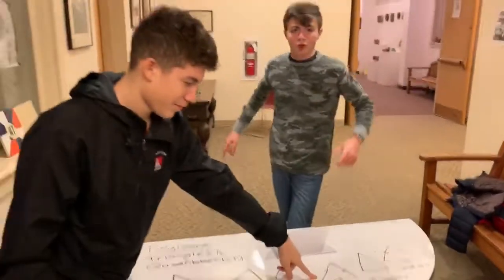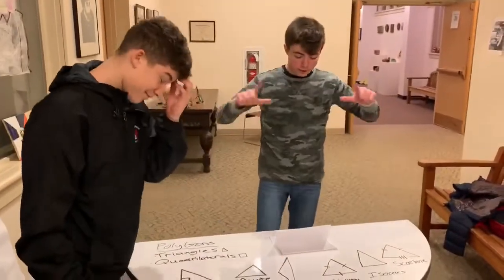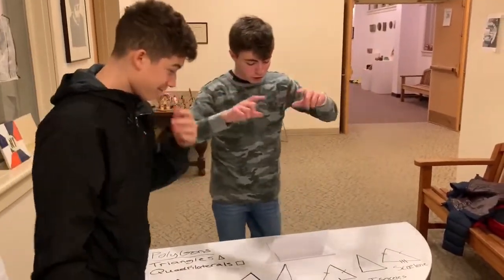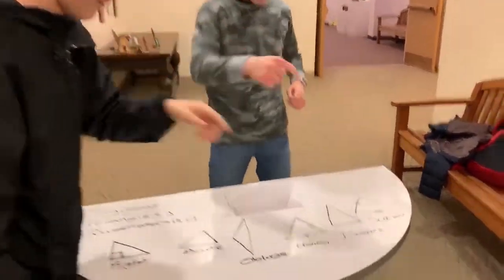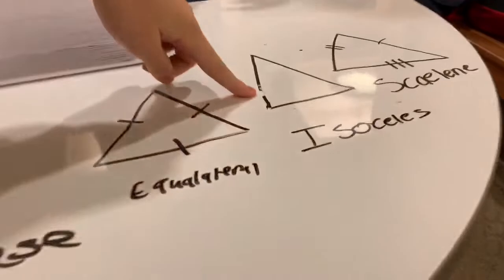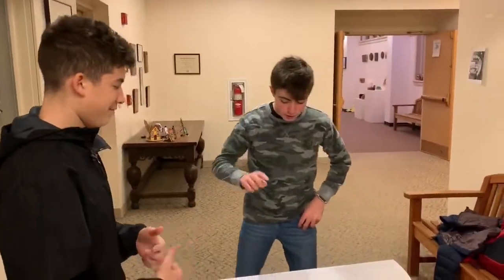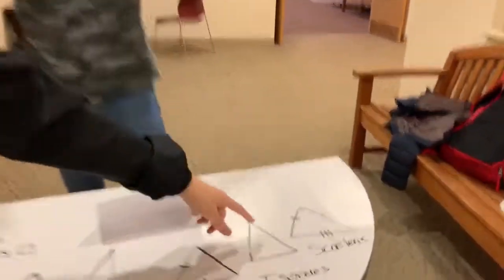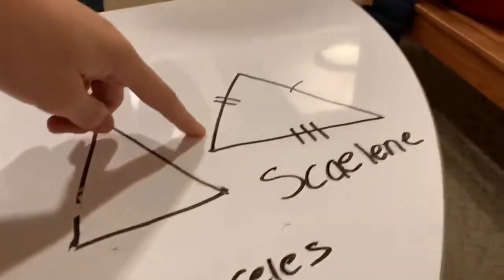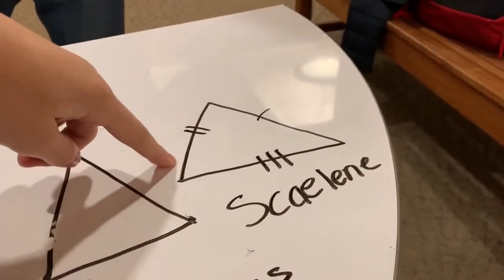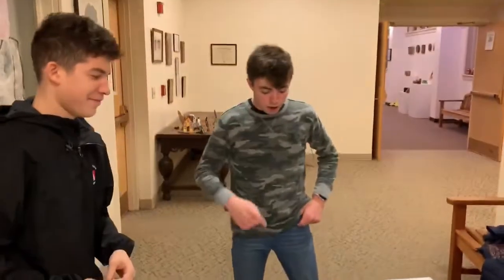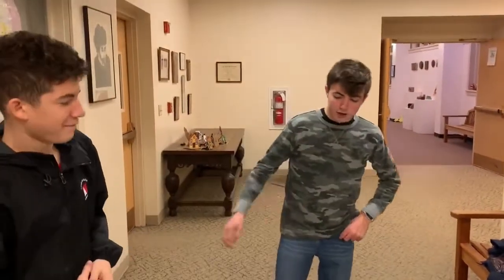We've got equilateral triangles — they're all equal in length to each other. With isosceles, two sides are congruent, but one side in the back isn't equal. But scalene triangles — they aren't equal at all.